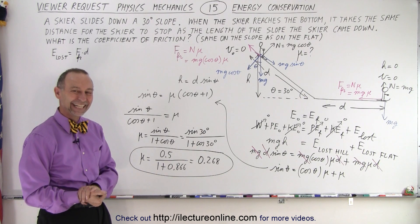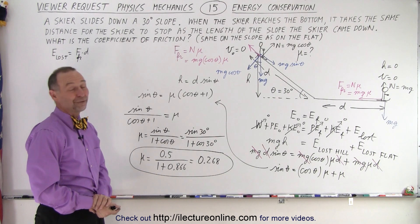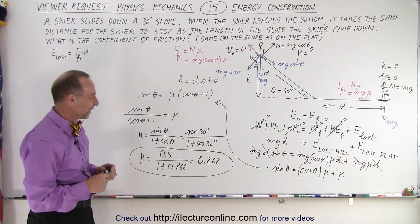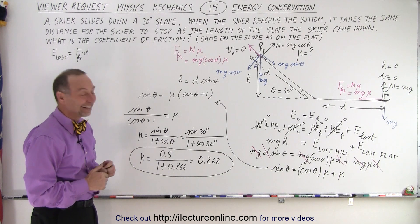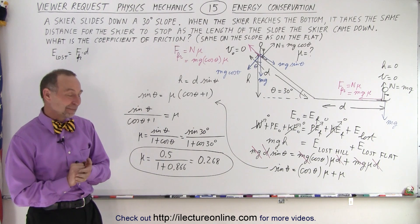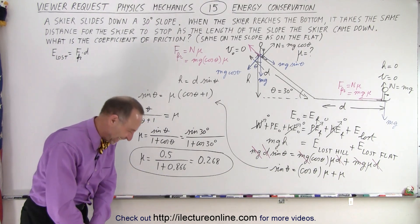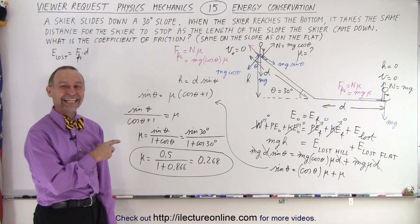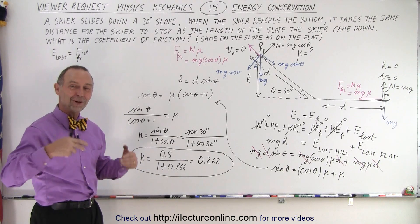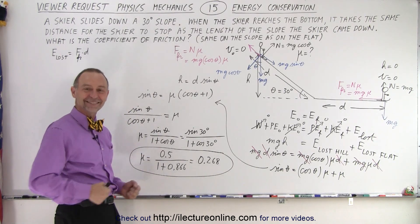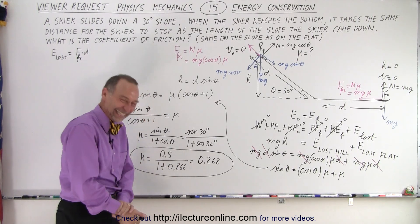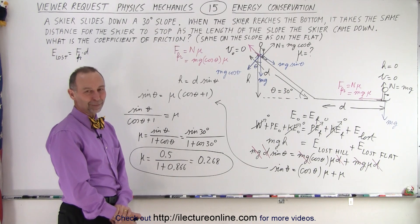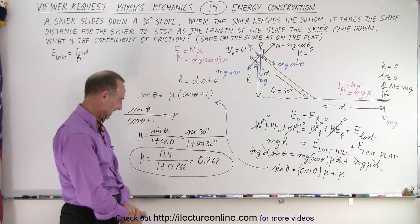That said, 0.268 is a pretty high coefficient of friction for snow — the coefficient for snow is probably less than 0.1. So this scenario doesn't really apply to skiing on snow. It might make more sense on an artificial slope with carpet mats, or on a surface with much higher friction than typical ski conditions.